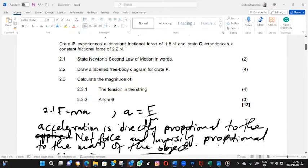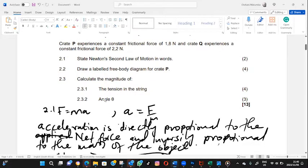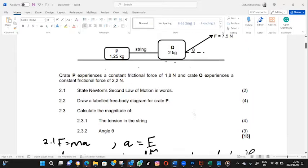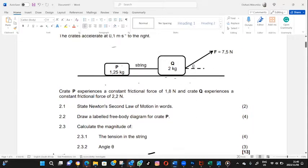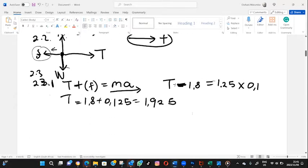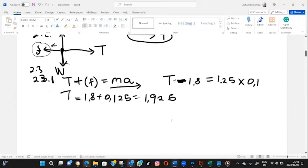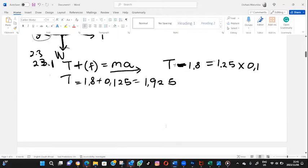Now the second question says, what is the angle theta? In order for us to get angle theta, we can see that the angle theta is attached to object Q. Now we have to attend to object Q.